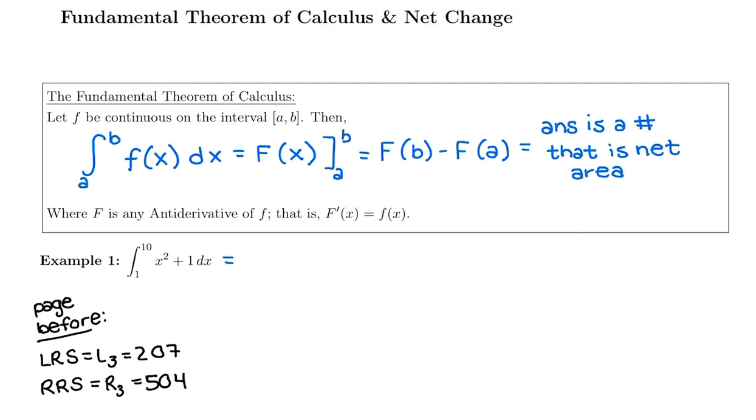So first thing we would do is we would integrate. So x squared, add 1, so we'd have 1 over 3, x to the 3. Antiderivative of 1 would be 1x. And then instead of having a plus C, we're going to have an evaluation bar from 1 to 10. So when we take any antiderivative from now on, I'm going to think, do I want a plus C or do I have an evaluation bar based upon whether the integral has bounds or not? This one does.